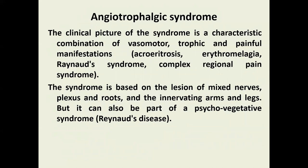Angiotrophic syndrome is characterized by a combination of vasomotor-trophic and painful manifestations. The syndrome is based on lesions of mixed nerves, plexuses, and roots innervating the arms and legs, but it can also be part of psychoautonomic syndrome, for example in cases of Raynaud's disease.